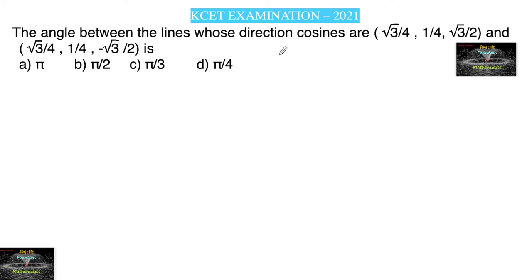Find the angle between the lines whose direction cosines are: root 3 upon 4, 1 upon 4, root 3 upon 2 and root 3 upon 4, 1 upon 4, minus root 3 upon 2.